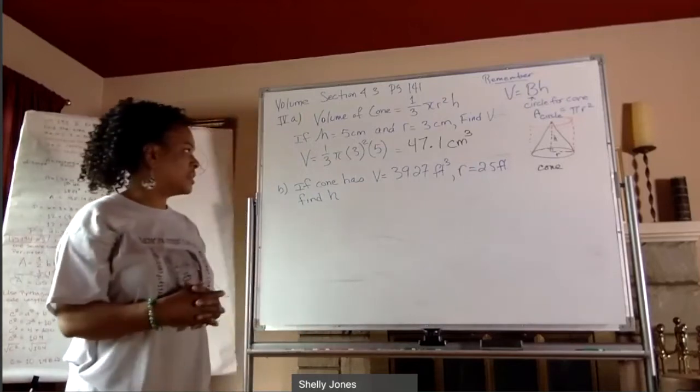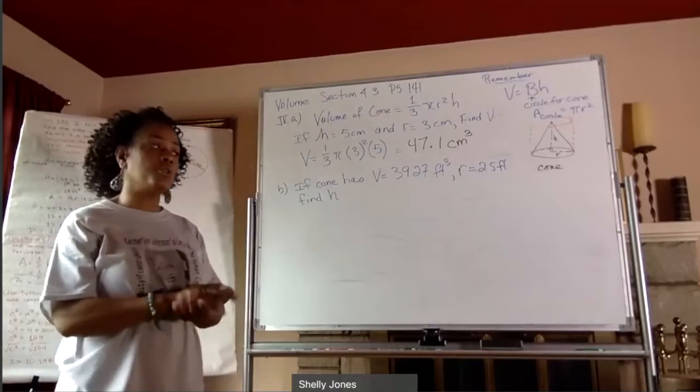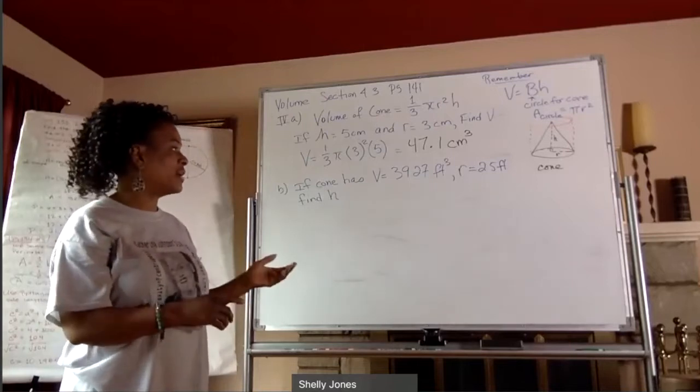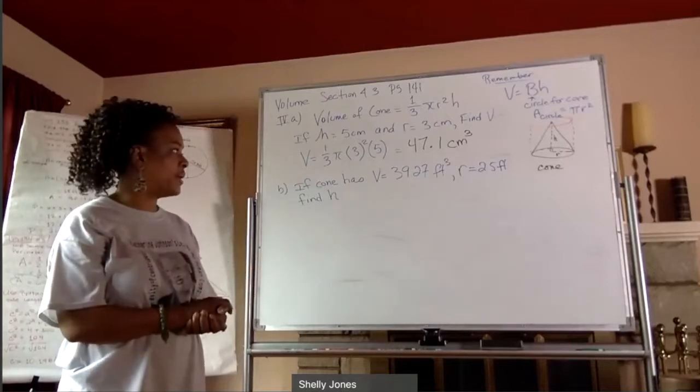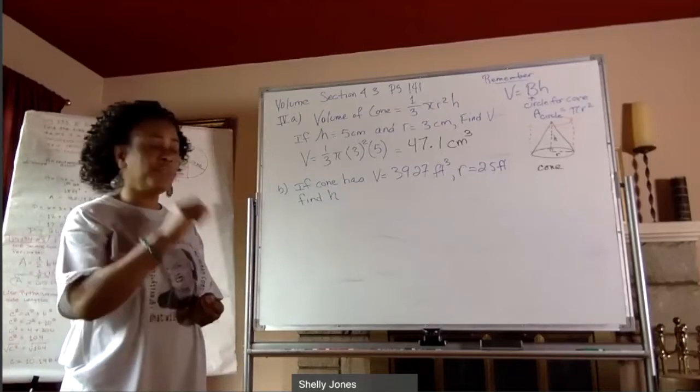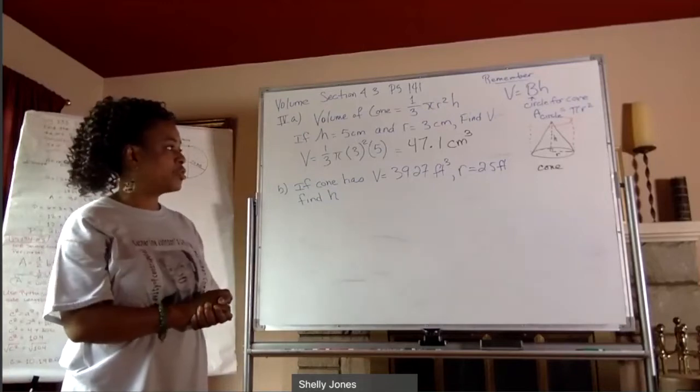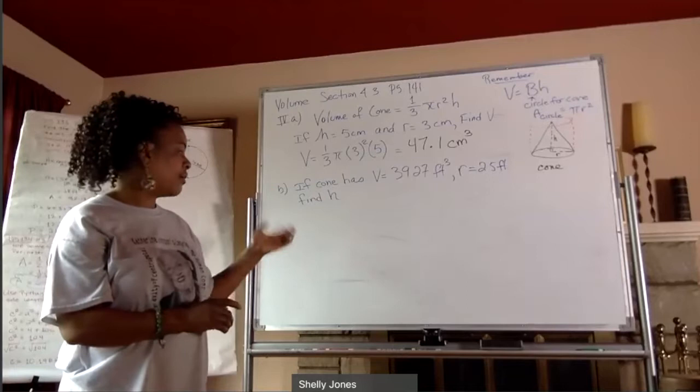So for B, it says, what if we know the volume? And I want to find the height. So we know the volume is 39.27 cubic feet. And we know the radius is 2.5 feet. How can I find the height?